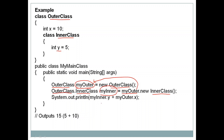We use System.out.println with myInner.y, accessing the inner class property y, plus myOuter.x, accessing the outer class property x. We are adding the values of inner class y (which is 5) and outer class x (which is 10), and the output will be 15. Even x from the outer class can be accessed through the inner class object because the inner class has access to outer class variables and methods.